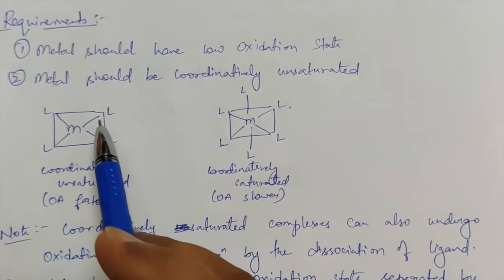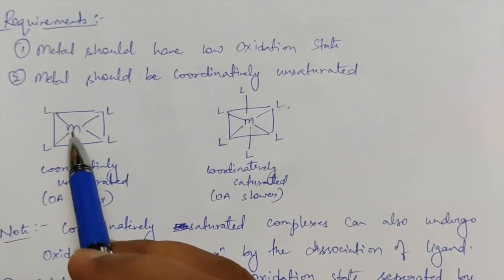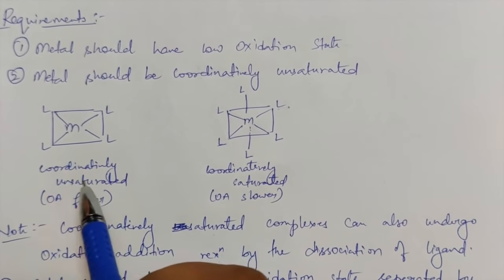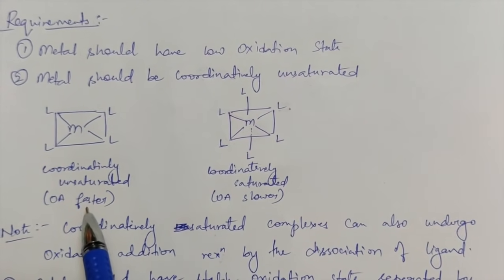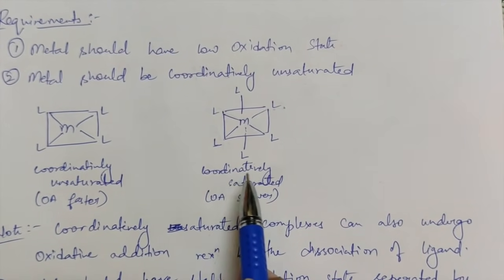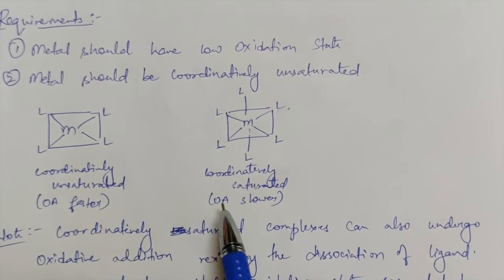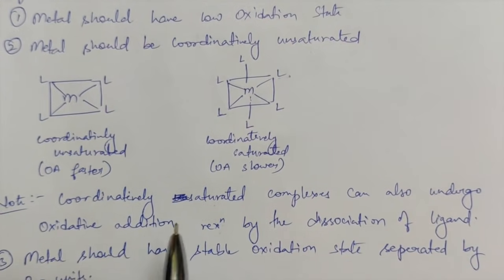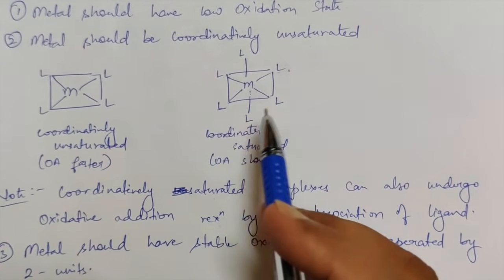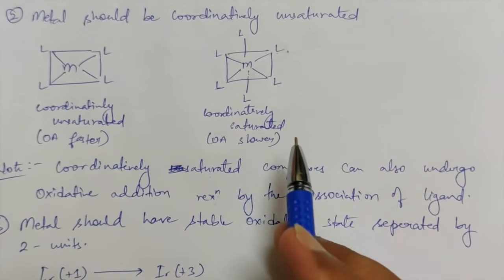If you look at this square planar complex it is coordinatively unsaturated because a ligand can come from the top side as well as from the bottom side, so oxidative addition will be done very fast. For an octahedral complex which is coordinatively saturated, it does not have room for another ligand to attack. So oxidative addition will be slower there — coordinatively saturated complexes can only undergo oxidative addition by the dissociation of a ligand first, which is very rare.